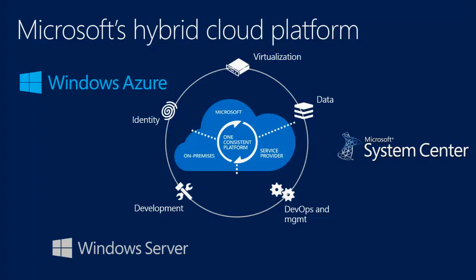This is the Cloud OS slide you've likely seen throughout TechEd — basically, what is the Microsoft infrastructure story for delivering this hybrid cloud pattern to customers. It's really built up of three pieces: Windows Azure is our public cloud piece where you can run virtual machines, virtual networks, and very high-scale compute and storage. Windows Server is the on-premises compute and storage engine. And then System Center is really the key piece because it allows us to manage, deploy, and configure across both of those environments.